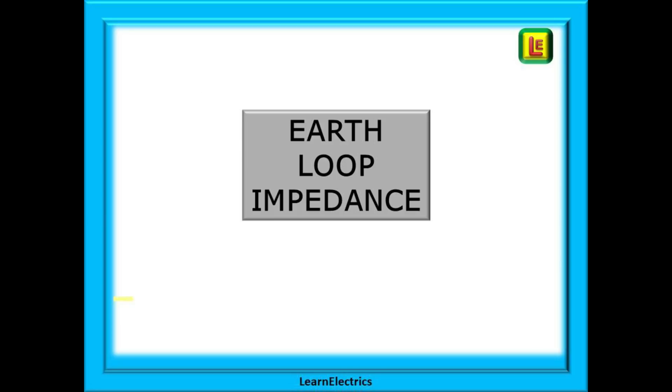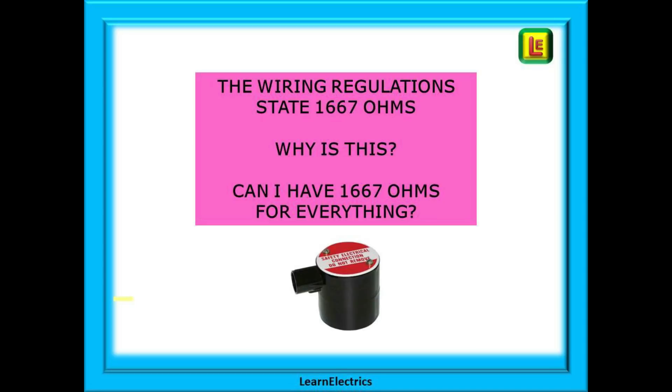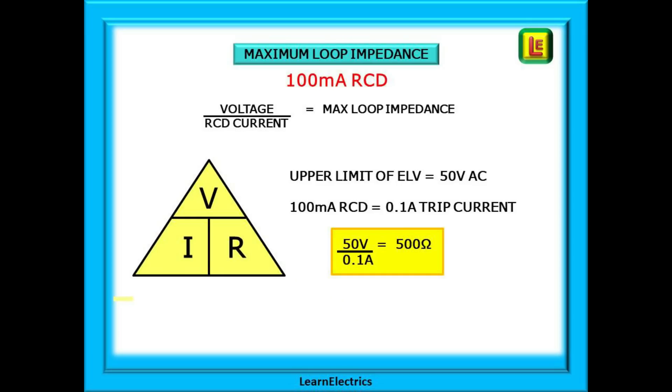Let's look briefly at loop impedance although we do have a separate video on this. Again, we are often asked questions on this such as: the wiring regulations state a maximum loop impedance of 1667 ohms for a 30 milliamp RCD. So why do you tell me that 200 ohms is a recommended maximum? And why can't I use 1667 ohms for everything? So let's look at this. We can start with a 100 milliamp RCD. Voltage divided by the RCD tripping current will tell us the maximum loop impedance permitted. But it is not 230 volts that we use. We should use the upper limit of the AC extra low voltage range as our touch voltage and 0.1 amps is the same as 100 milliamps. So 50 volts divided by 0.1 amps gives us the maximum loop impedance for a TT system of 500 ohms.